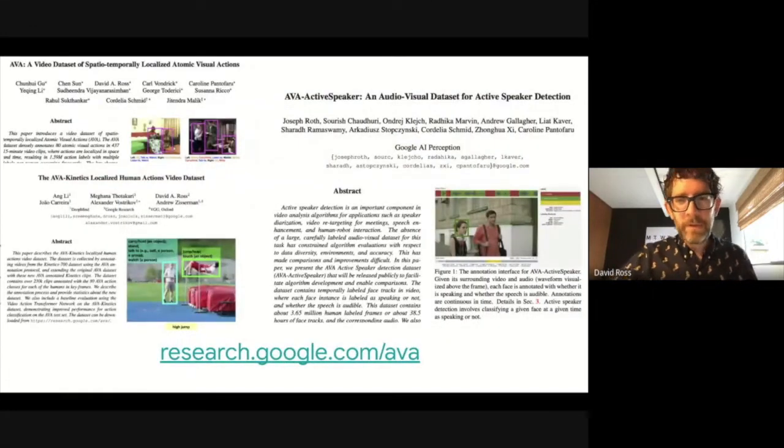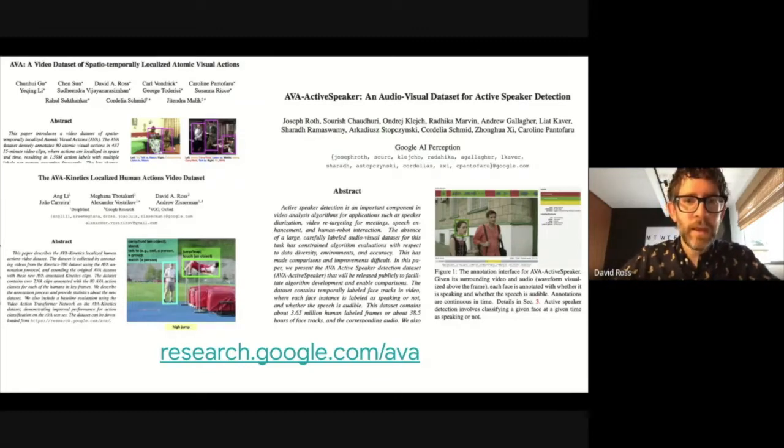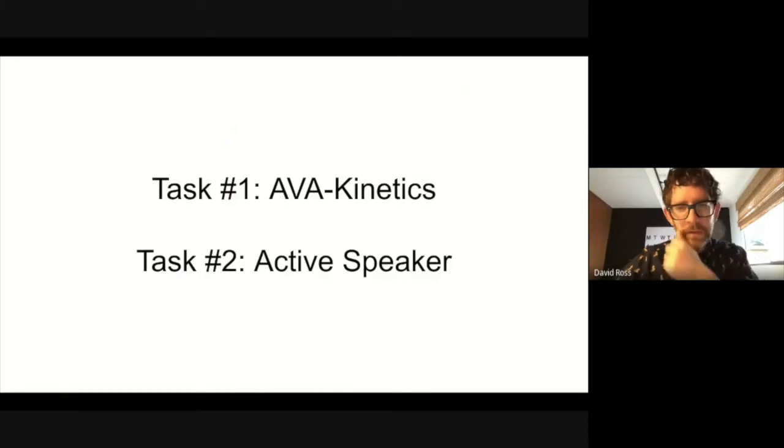AVA is a family of video datasets based on the task of recognizing human actions and localizing them in space and time. The original dataset was AVA Actions, released in 2018, followed by AVA Speech and AVA Active Speaker, which focus on the important subtask of identifying faces which are speaking at each frame. This year, we introduced an expanded actions dataset we call AVA Kinetics. The challenge this year includes two tasks, AVA Kinetics and Active Speaker, and we'll begin with AVA Kinetics.